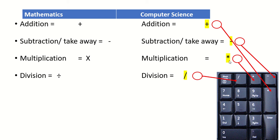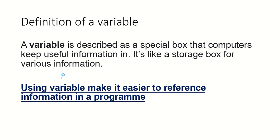The star represents multiplication and the slash represents division, and everything else stays the same. To build this calculator, we need to understand how a computer program actually works. Every computer program must have an input or an output. The input or the output is what we call a variable. A variable is just information that we store to use later, while we're running the program, or to help build the program.